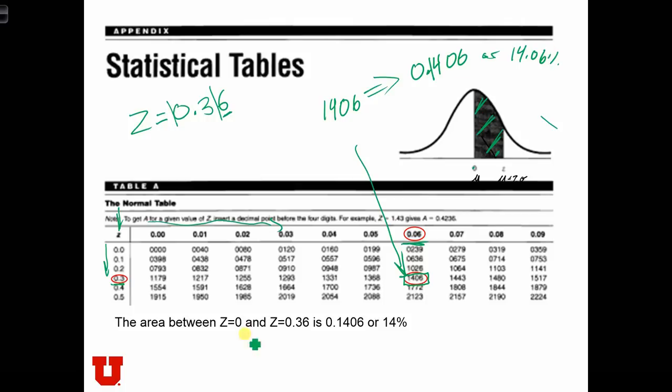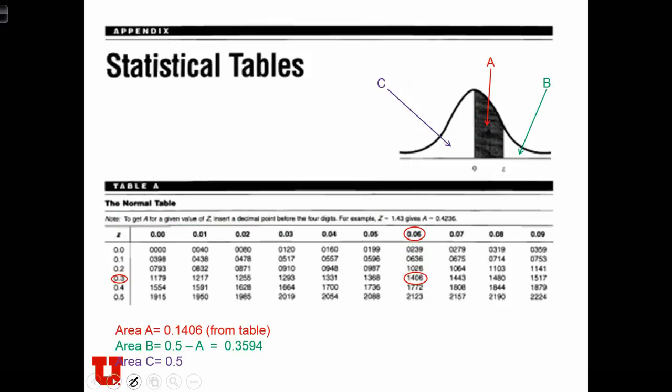So the area between 0, z equals 0, and z equals 0.36 is 14%.